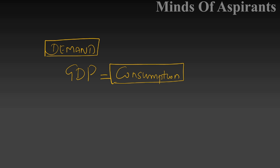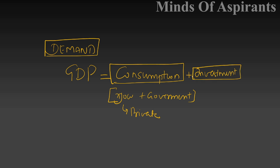Both you and the government consume — this is private consumption. Whatever we buy is private consumption, but the government also consumes. The next component is investment — this also goes into improving productivity. For example, manufacturing a T-shirt requires investment in shops, manufacturing units, and transport. So investment contributes to the GDP figure.